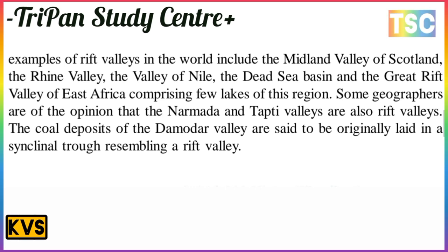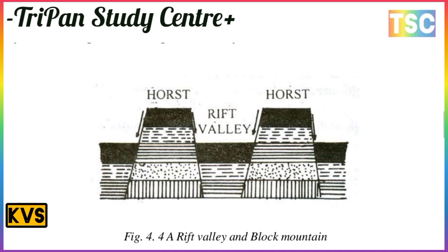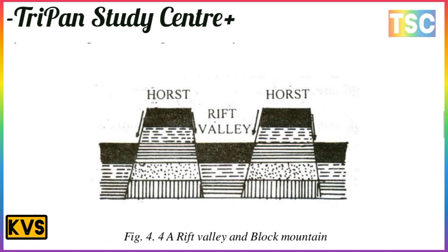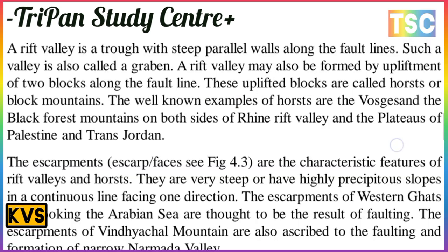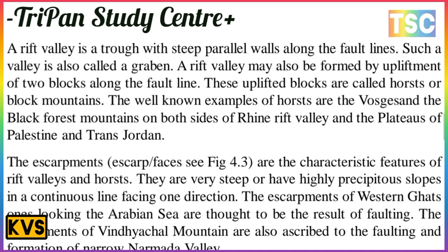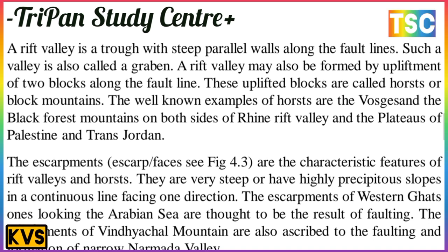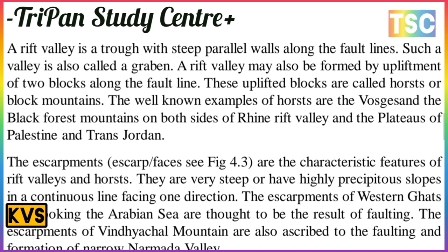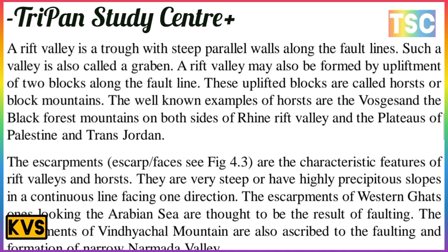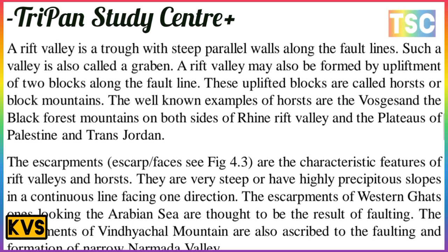The diagram shows the rift valley and block mountain. A rift valley is formed between step-parallel walls along fault lines. Such a valley is also called a graben. A rift valley may also be formed by the upliftment of two blocks along their fault lines, and these uplifted blocks are called horsts or block mountains. Well-known examples of horsts are the Vosges and the Black Forest mountains on both sides of the Rhine rift valley, and the Plateaus of Palestine and Trans-Jordan.